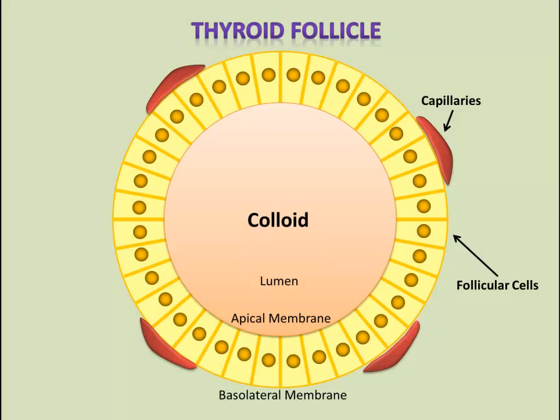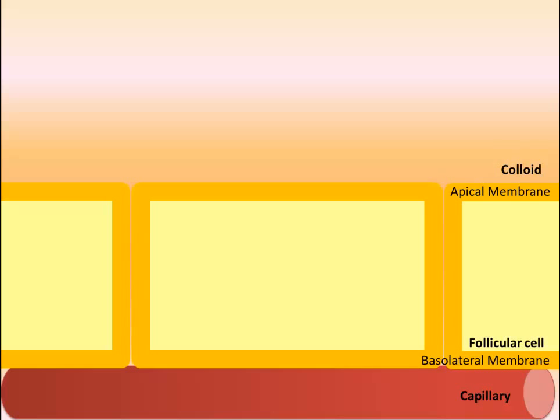In order to thoroughly discuss the production of thyroid hormones, we will zoom in on a magnified version of the follicular cells. The follicular cells are represented by yellow rectangles in the center of the screen, with the basolateral membrane facing down towards the capillary and the apical membrane facing the colloid at the top. The two thyroid hormones, T3 and T4, are produced by the thyroid follicles using a protein called thyroglobulin (TGB) and iodide molecules from the diet.